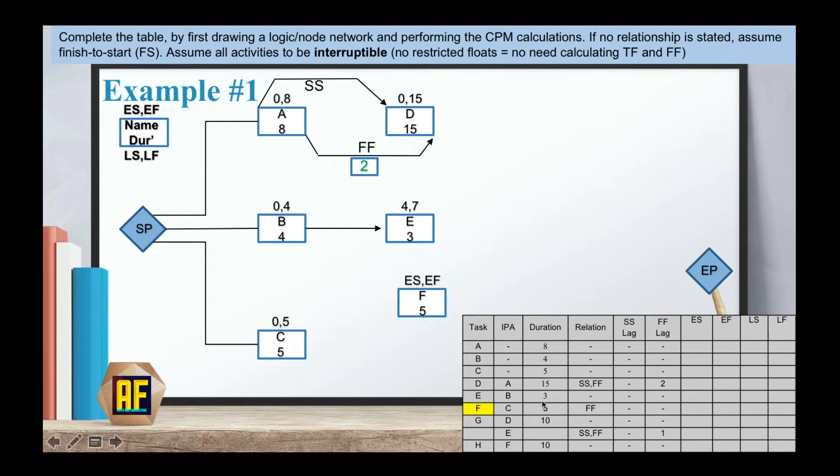Activity F: notice that we have a finish to finish relationship with a duration of 5 days. Activity F cannot finish until activity C is finished, meaning that EF needs to be equal or bigger than 5. We could just pick the number 5 because we want to choose the smallest numbers possible. We want to finish as fast as possible. Let's pick 5 and then our early start will be 5 minus 5 equals 0. This is different from what we had until now, which means that activity C and F will both start at the same time and also end at the same time. By doing that, we can actually save some time on the project.